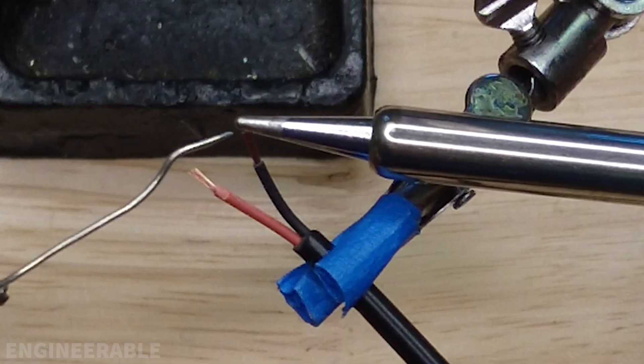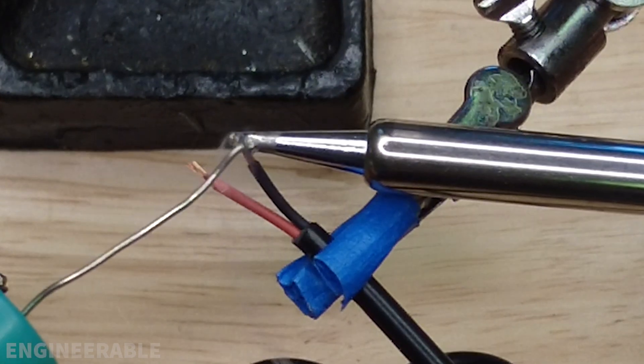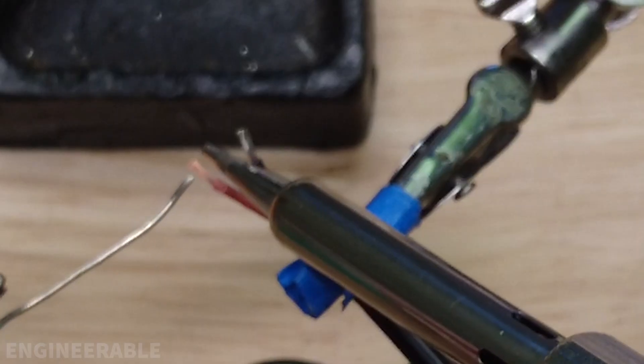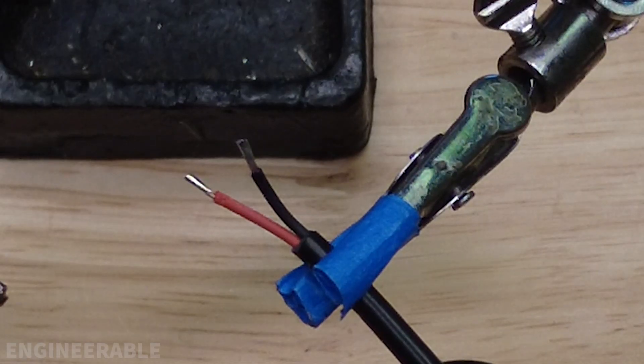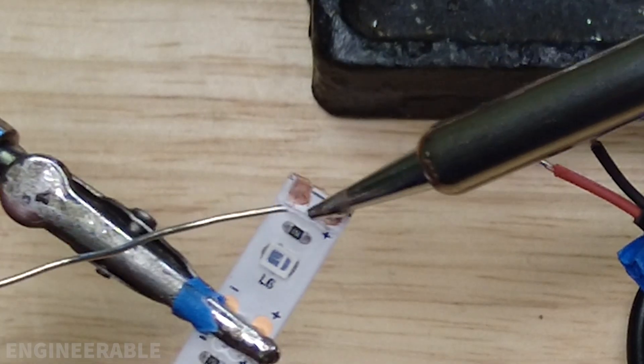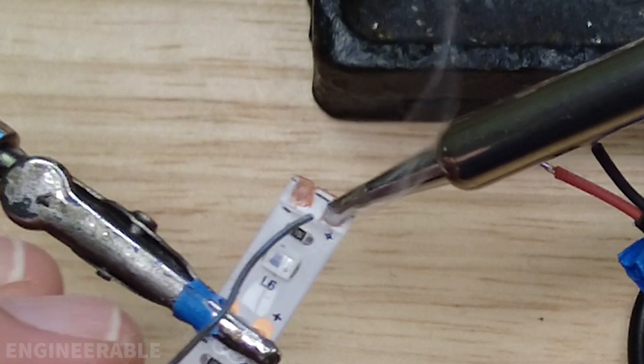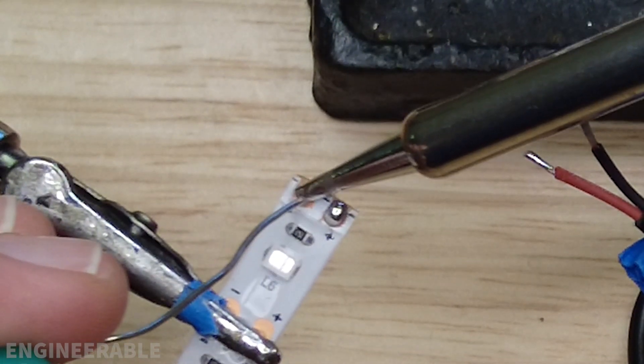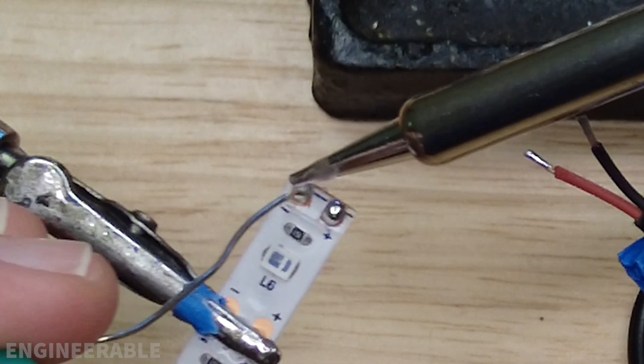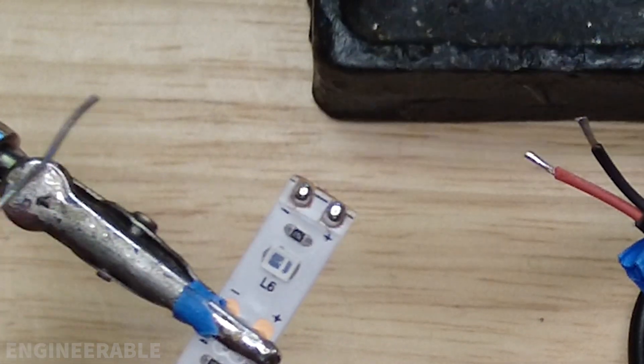First thing I'm going to tin these wires with some solder. Worked perfectly fine for that. Now I'm going to tin the contacts on this LED strip. Worked well for that.